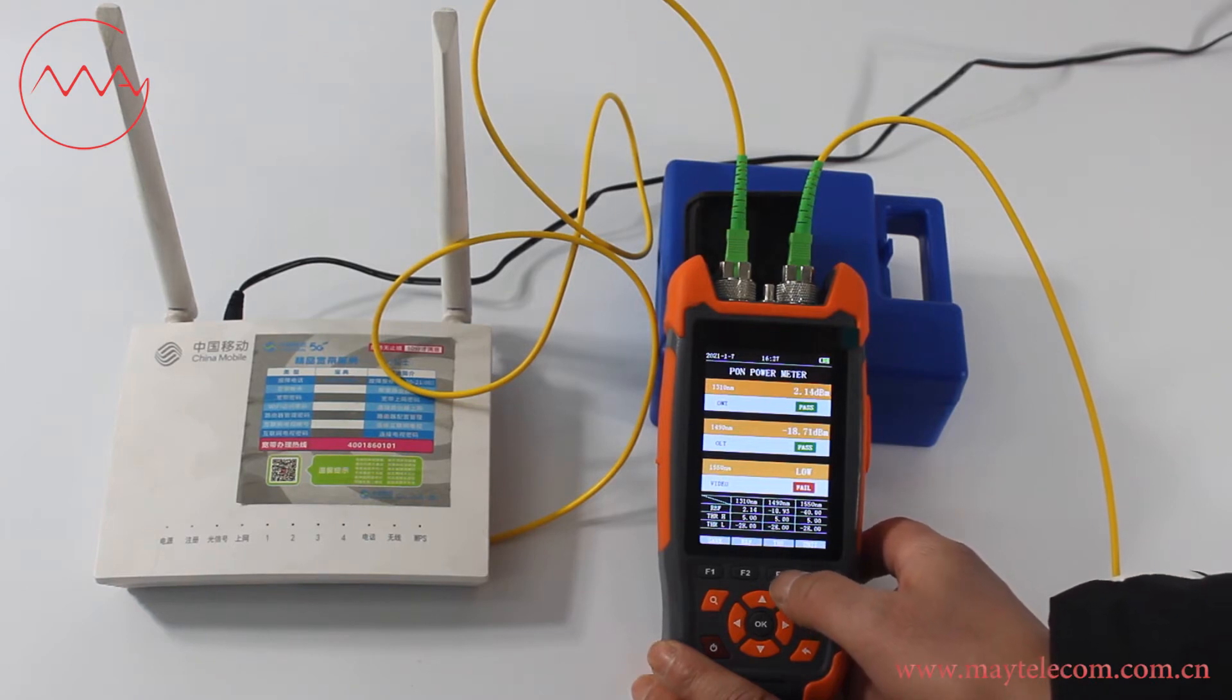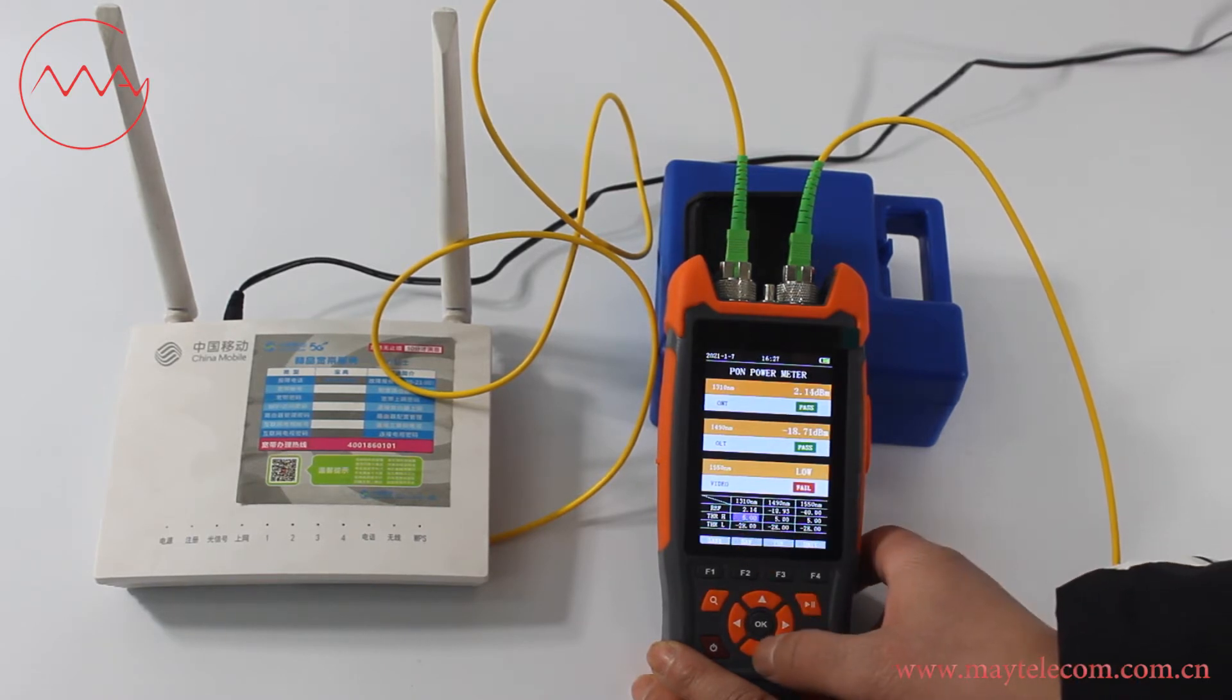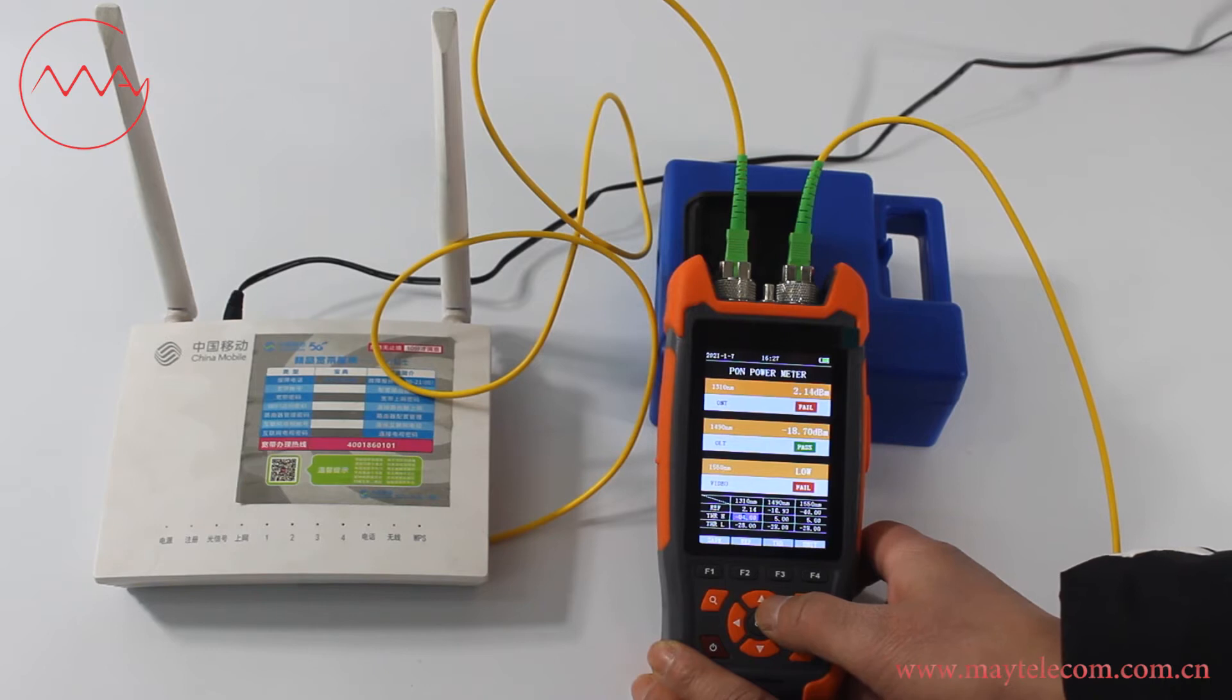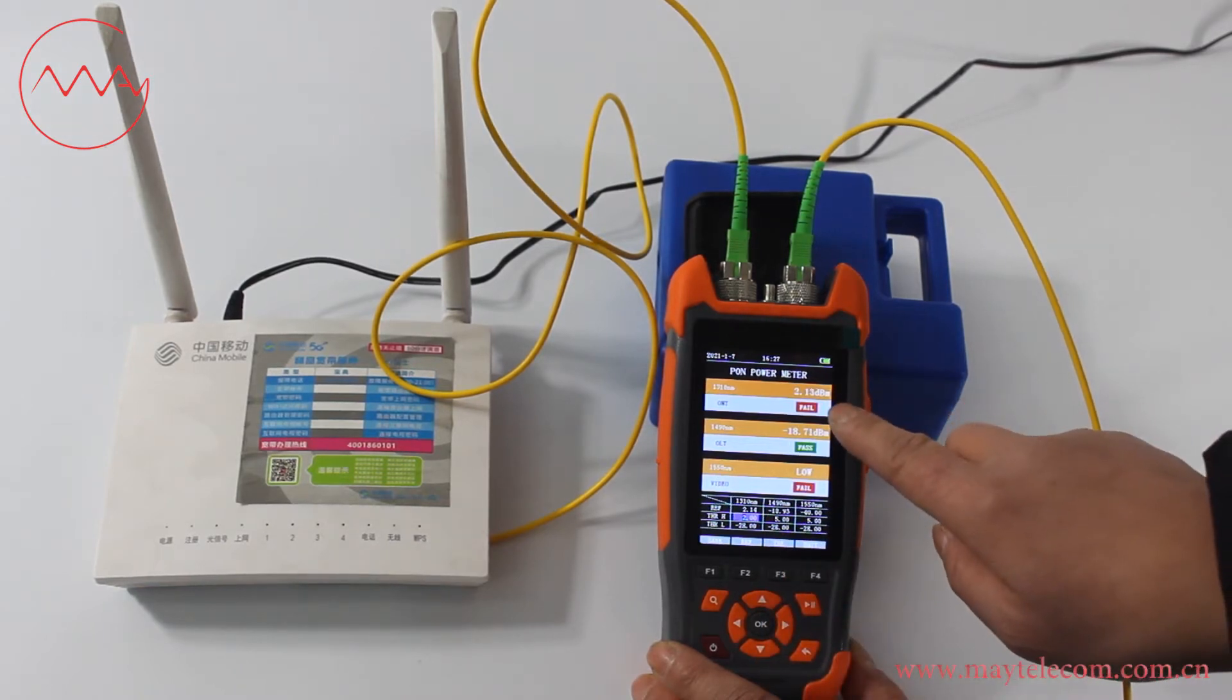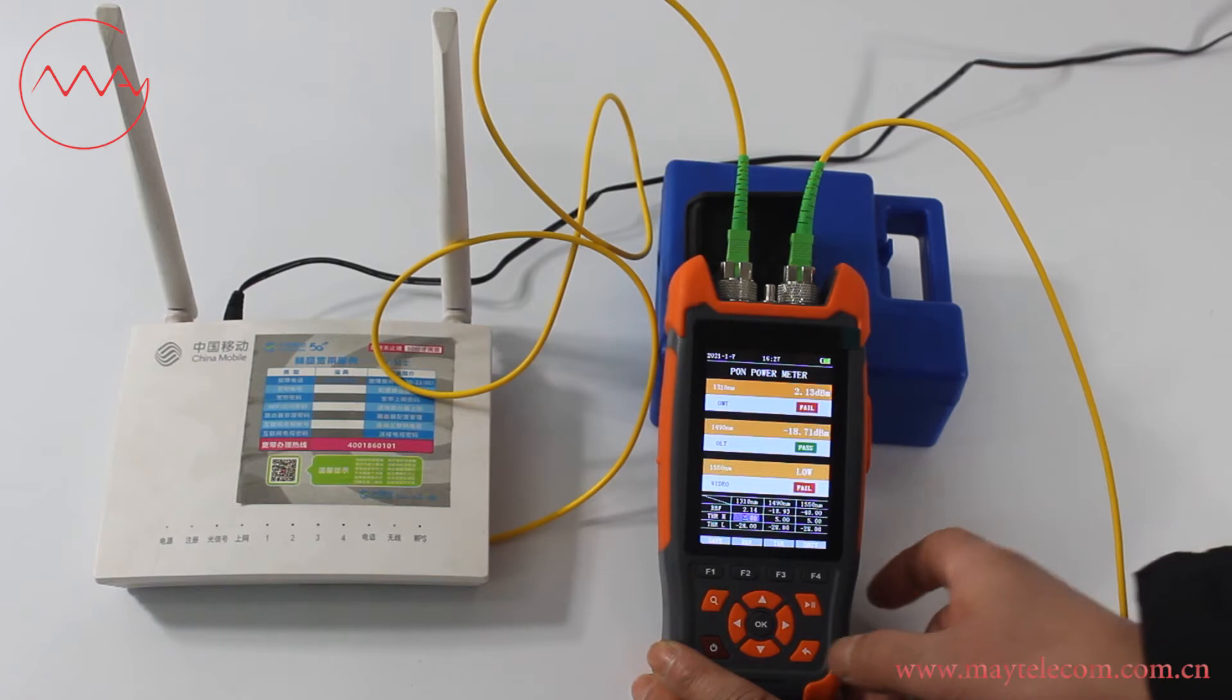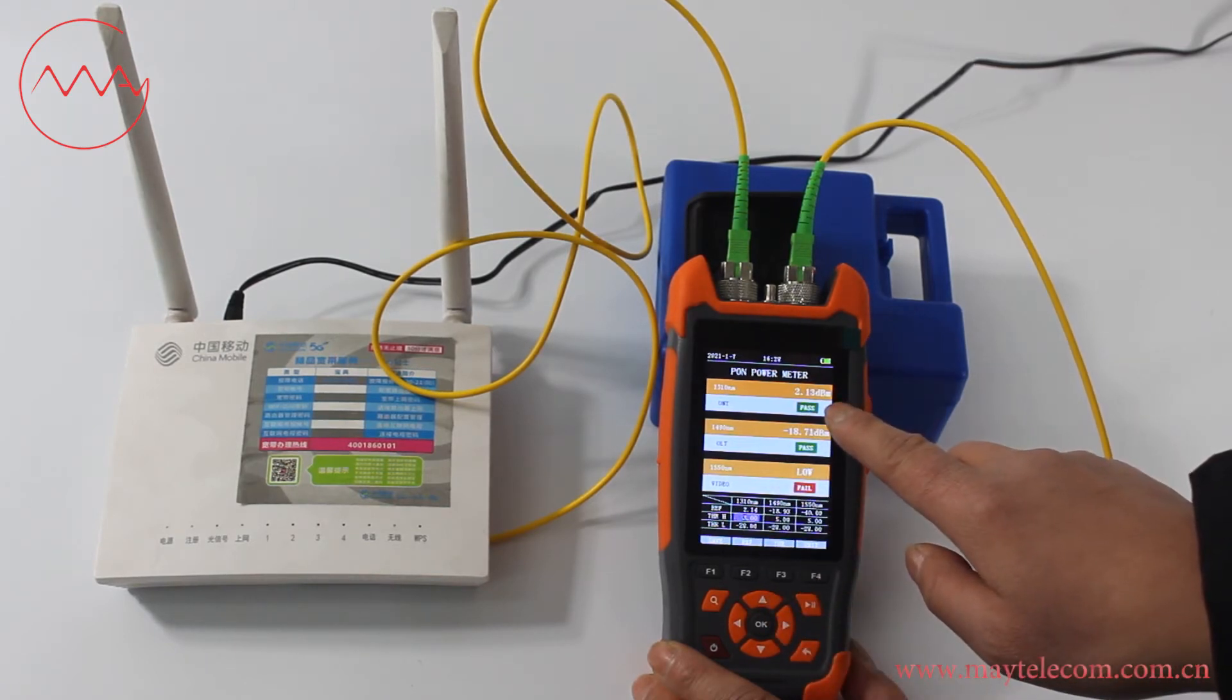Press F3 key to set threshold. For example, set threshold at 1310. At 2 dBm, it changes to fail. At 3 dBm, it shows pass.